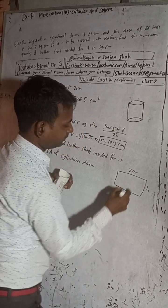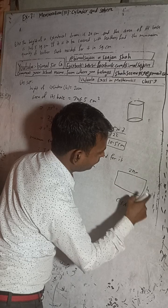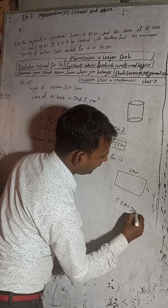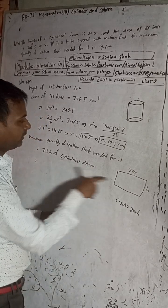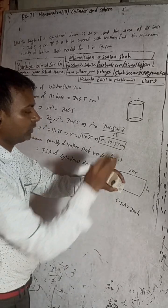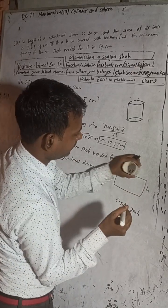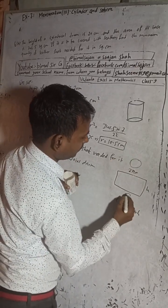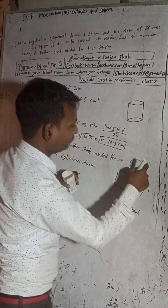So now, the curved surface area formula will become length times breadth, that means 2πr × h. And in the same way, this curved surface area plus two circles - this circle and this circle at the top and down. So one circle area is πr², so 2πr².